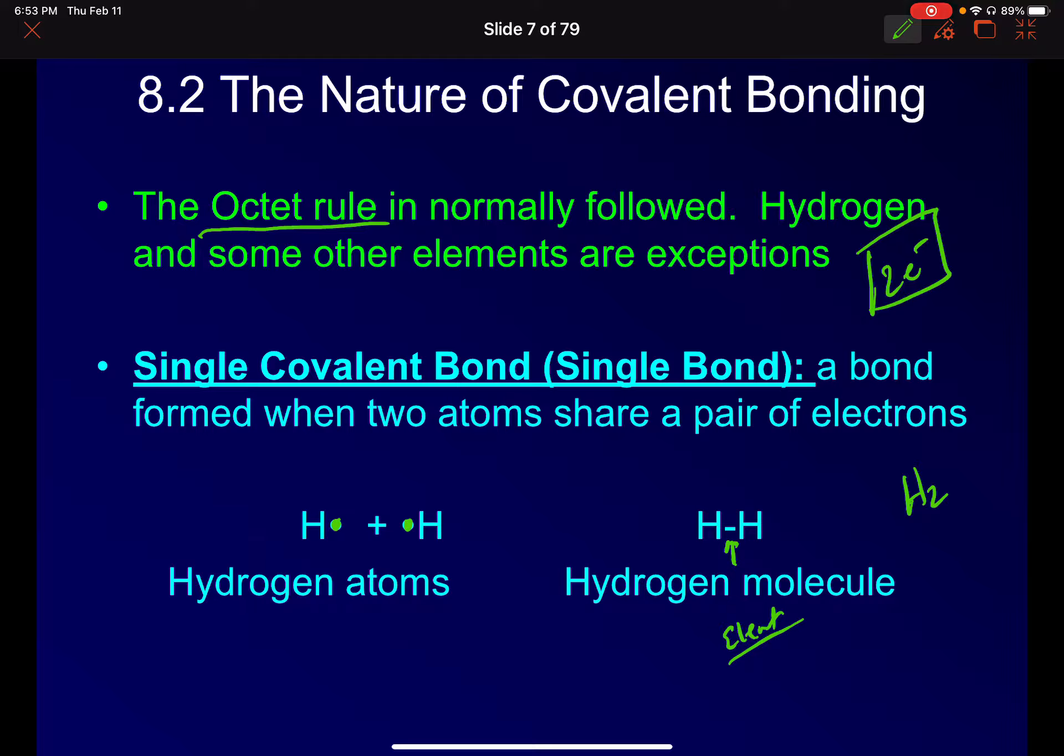As I said, there are those diatomic elements. There's hydrogen, nitrogen, oxygen, fluorine, bromine, chlorine, iodine. Those are all the diatomic molecules. So di meaning two. So they bond with themselves and they make single or double or triple bonds, depending which ones we're talking about. And we'll go through that in a minute.